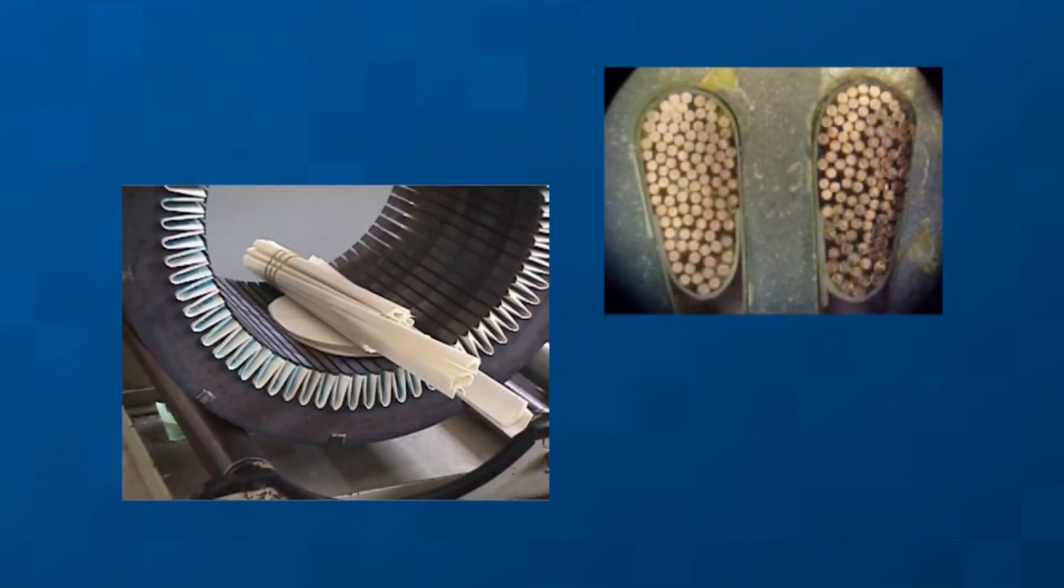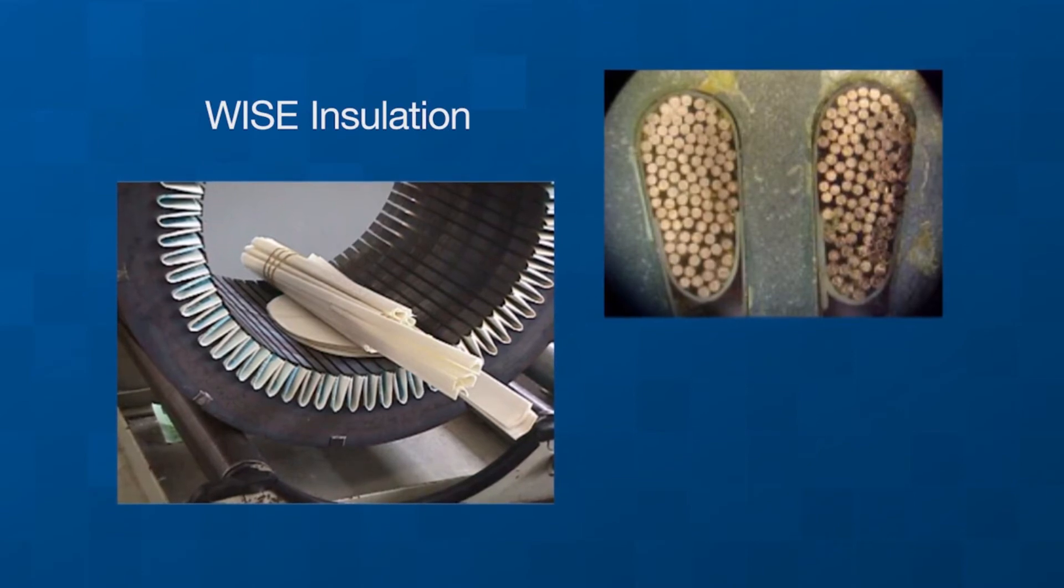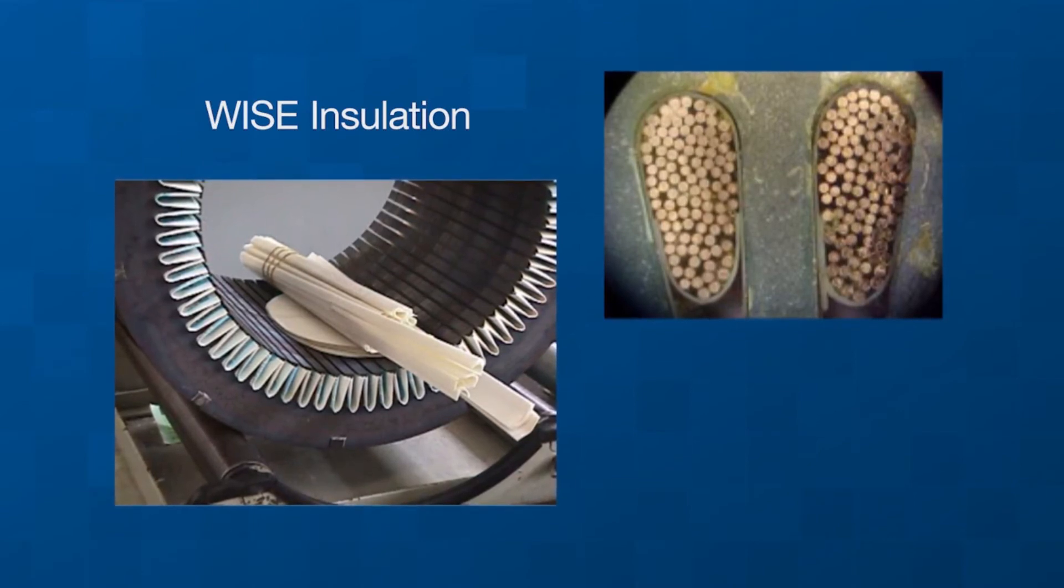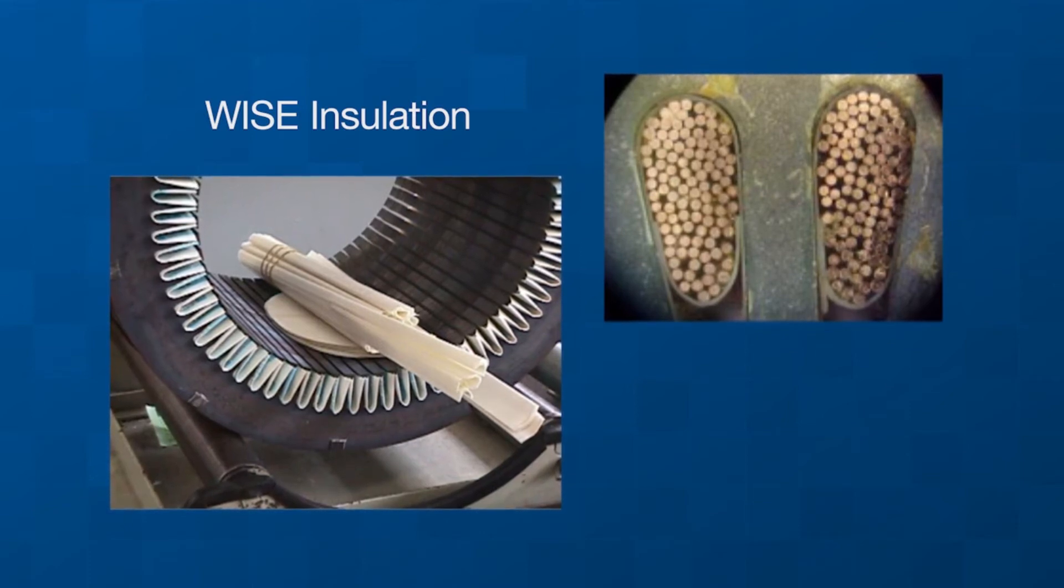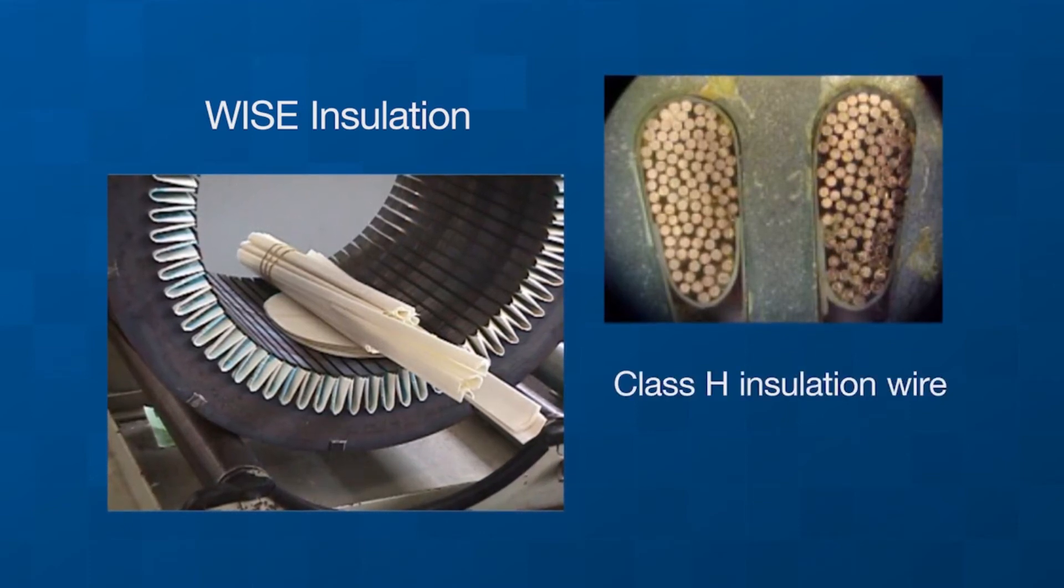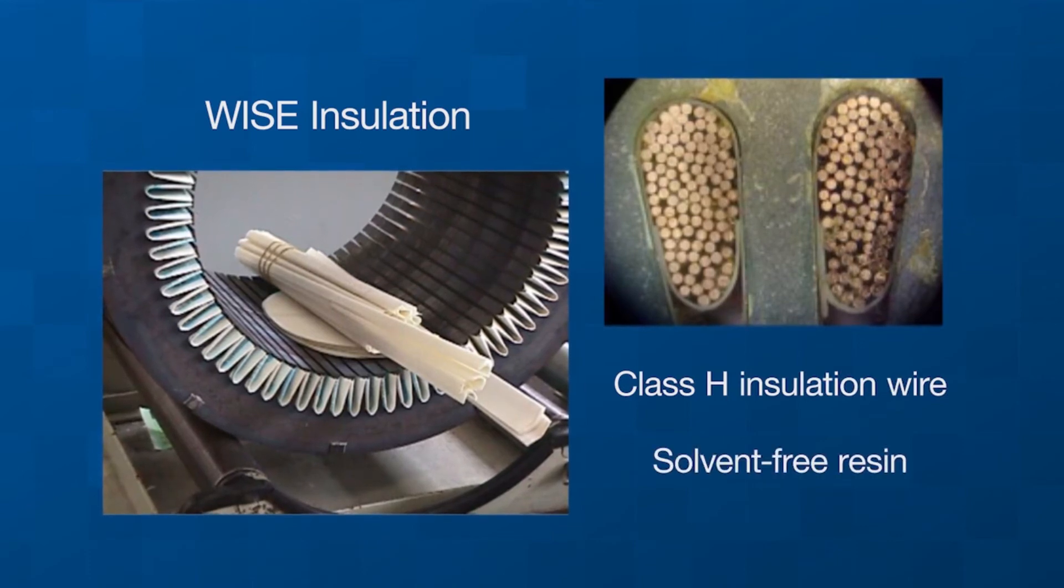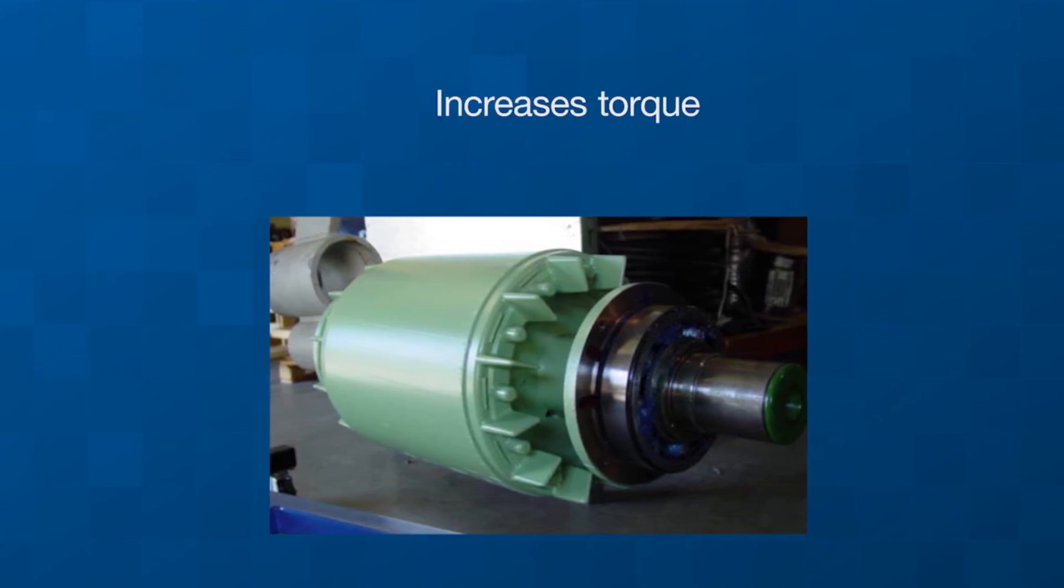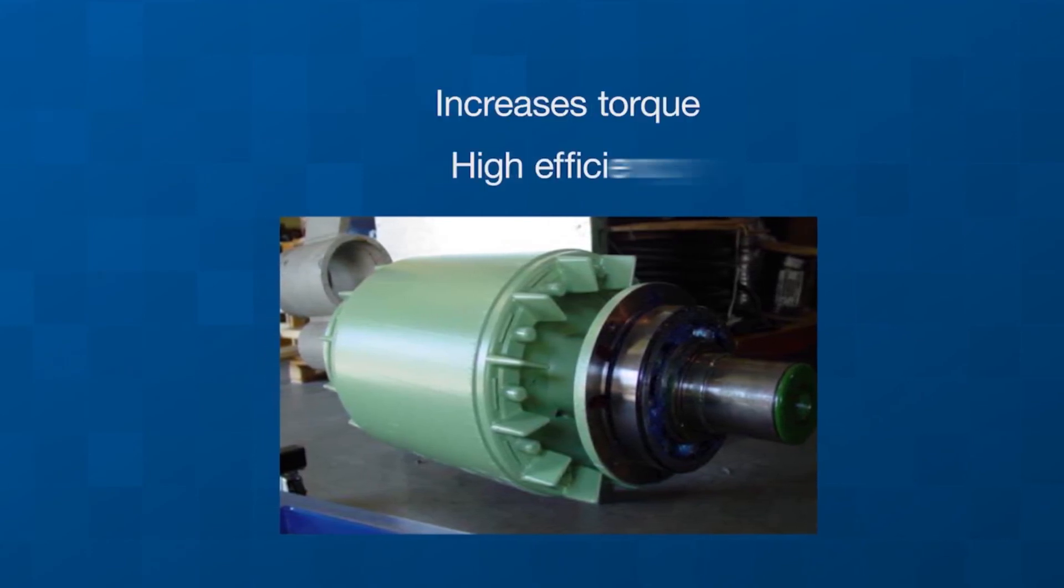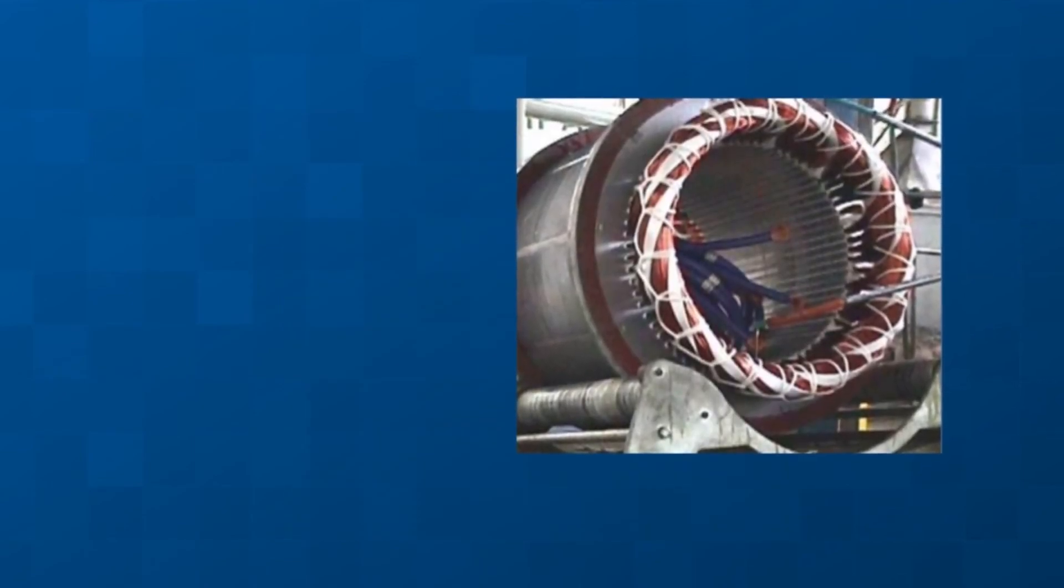All W22 motors are designed with a WISE insulation system, WEG insulation system evolution, permitting them to be driven by a VFD. This continuous flow system is composed of Class H insulation wire and a solvent-free resin, eliminating any trapped air bubbles. The rotor's cast aluminum construction increases torque, and the stator windings provide high efficiency. Both coil heads are securely laced for added strength.